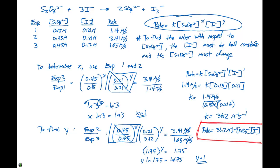Then we can determine the rate constant K by looking at any one of the experimental trials — here I picked the first one and got 36.2. So our overall rate law is 36.2 M⁻¹s⁻¹ times the concentration of S₂O₈²⁻ to the first power times I⁻ to the first power, written down here inside the red box.